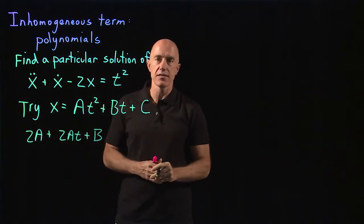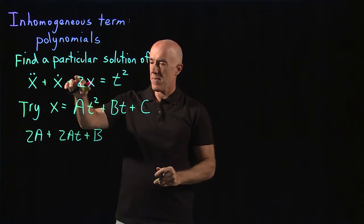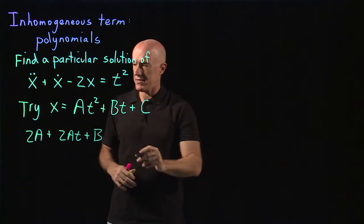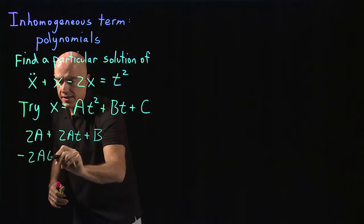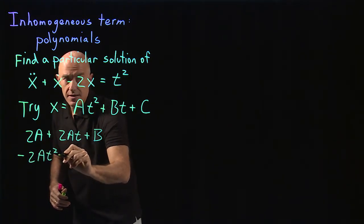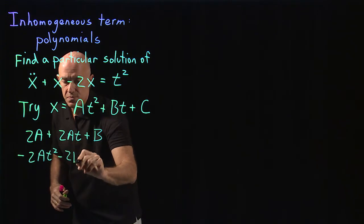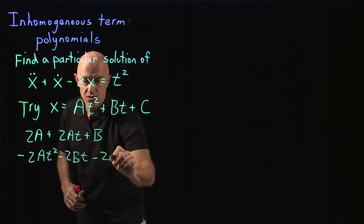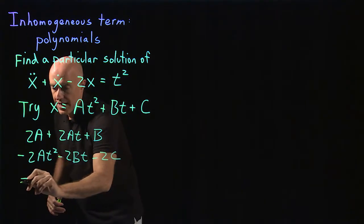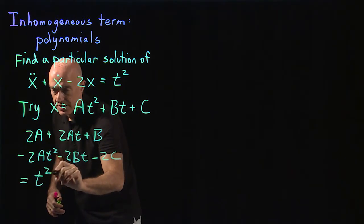The derivative of a constant is zero, minus 2 times x, so minus 2at squared, minus 2bt, minus 2c. And all that is supposed to be equal to t squared.